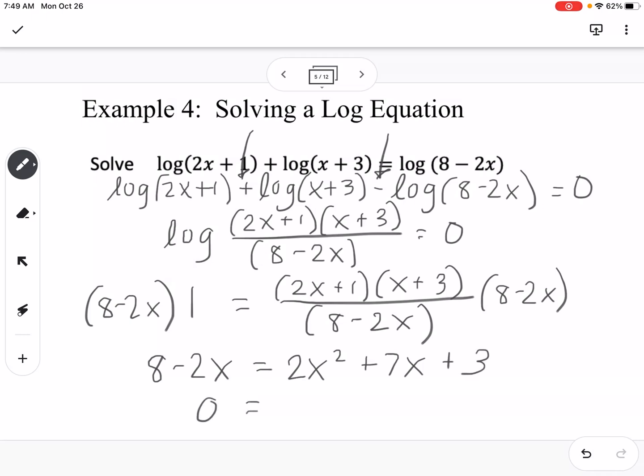Then I'm going to get everything onto the same side, so this would be 2x squared plus 9x. If I add the 2x to both sides, and then if I subtract 8, it's going to be minus 5.